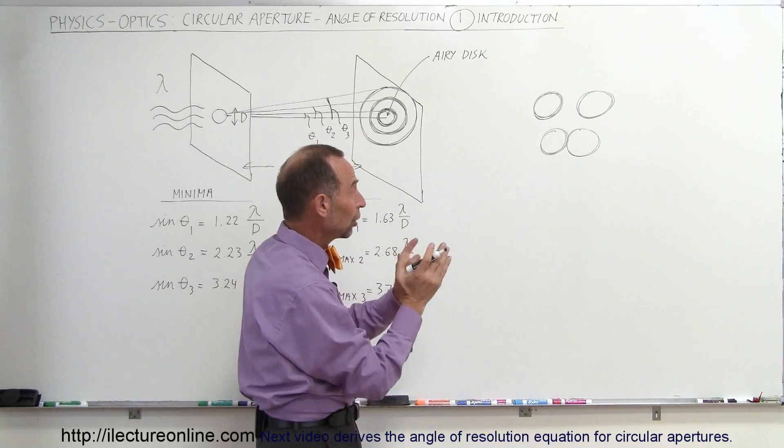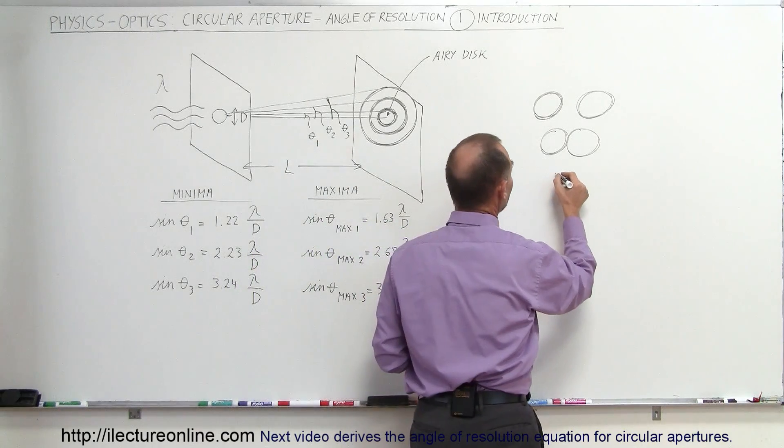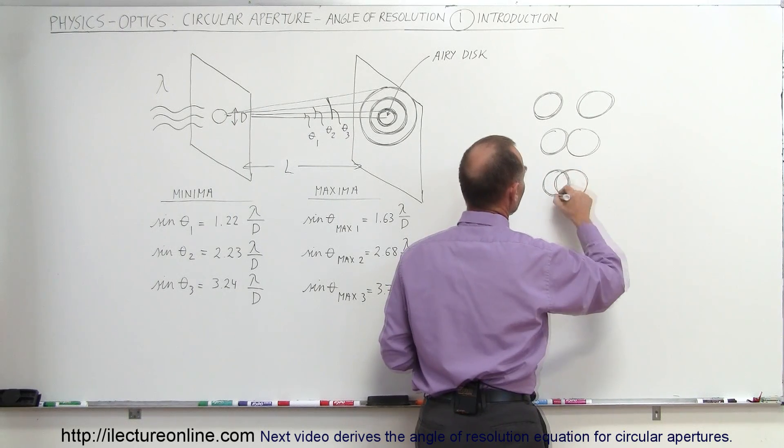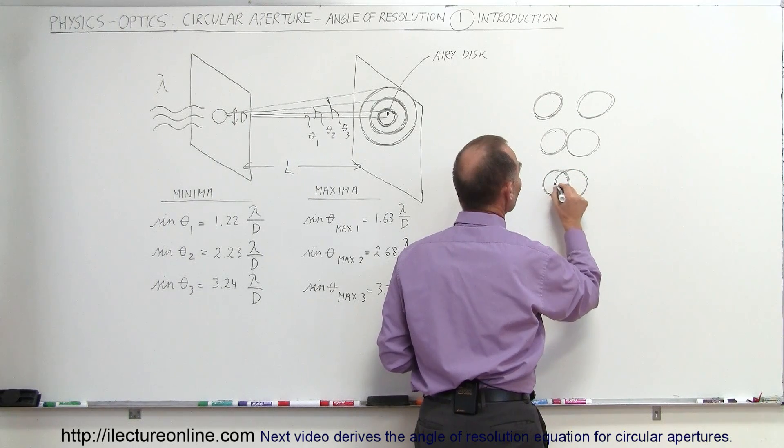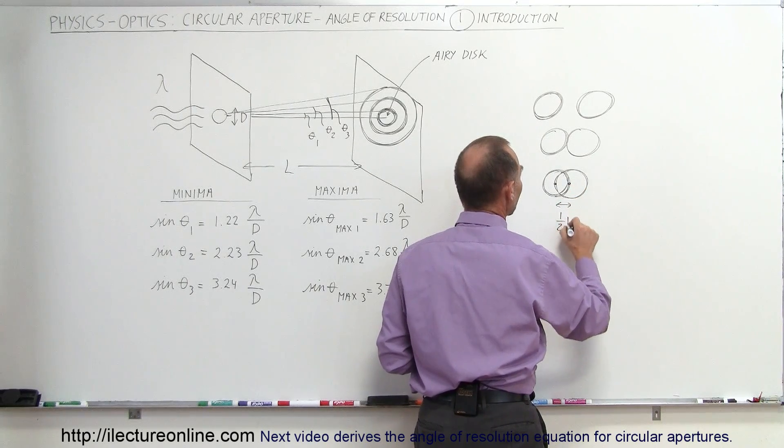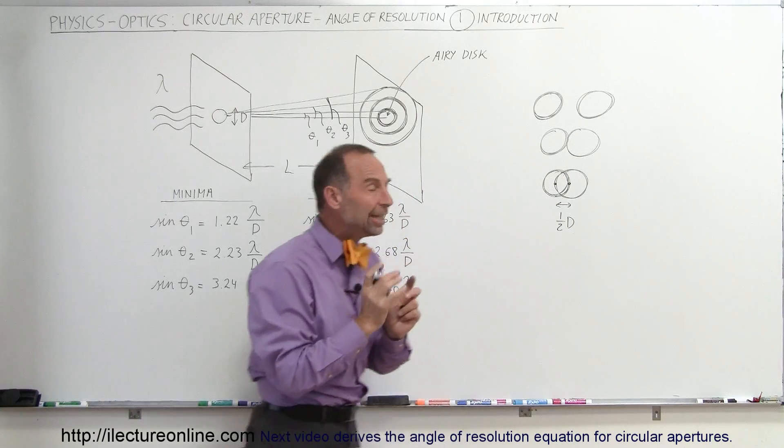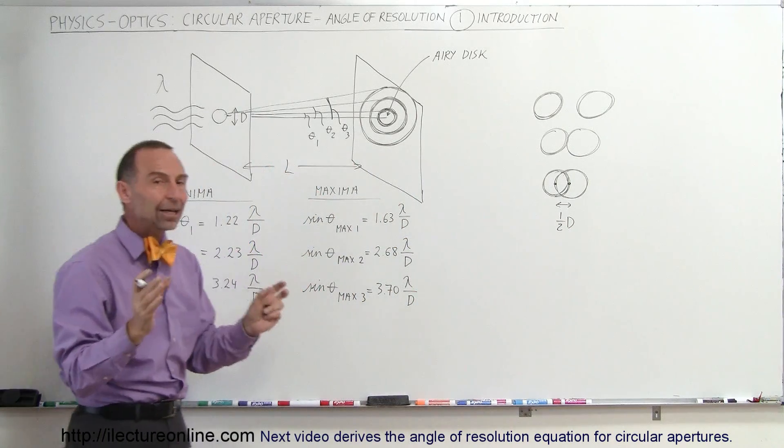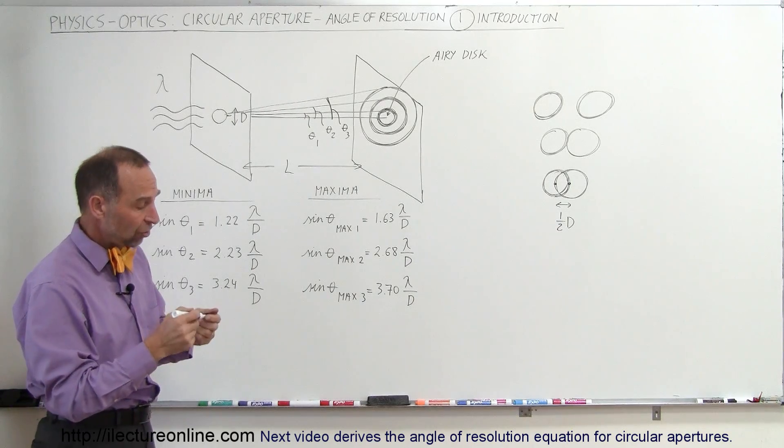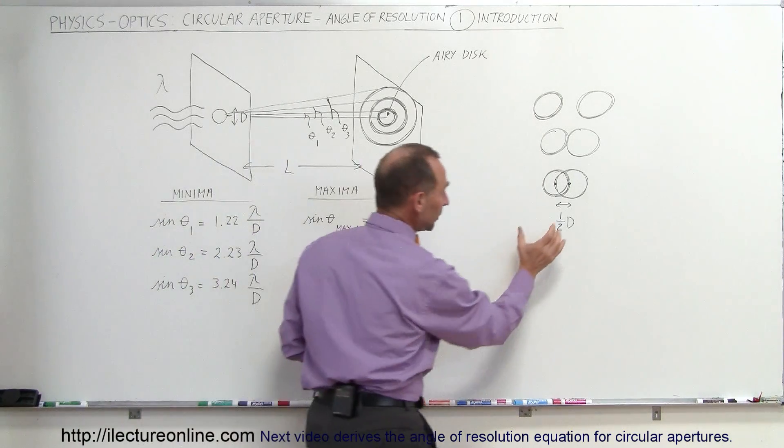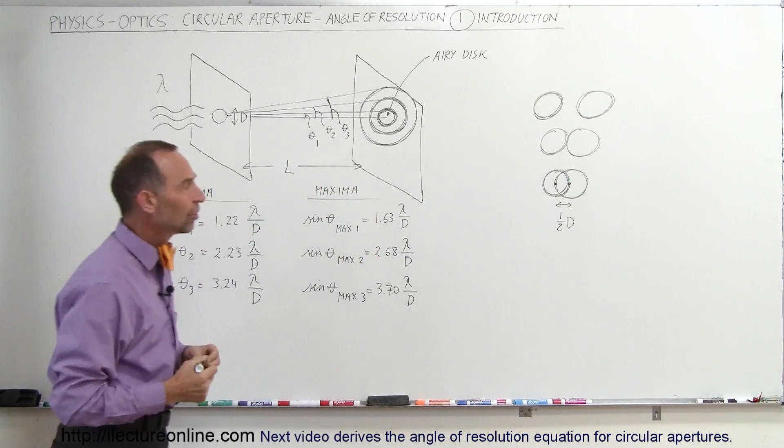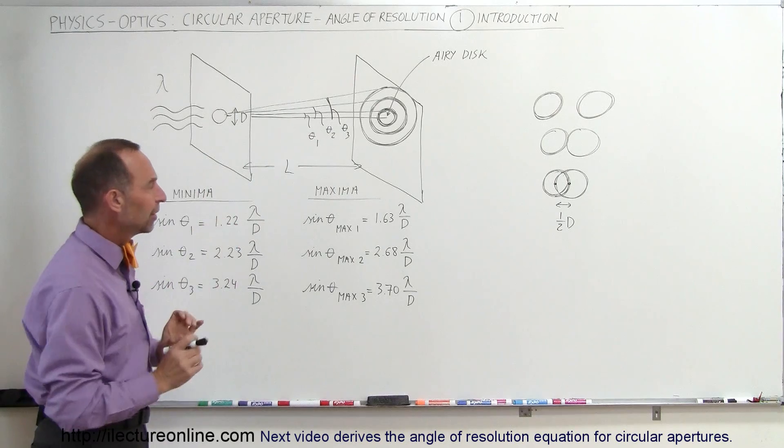There's an ultimate limit from which we can no longer resolve. If it gets any closer than that, we can no longer resolve the two objects. And that happens when the two Airy disks overlap in such a way that the distance from one center to the distance of the other center, when that distance becomes half the diameter of either one of the Airy disks, at that point, any closer than that, we can no longer resolve the two objects.